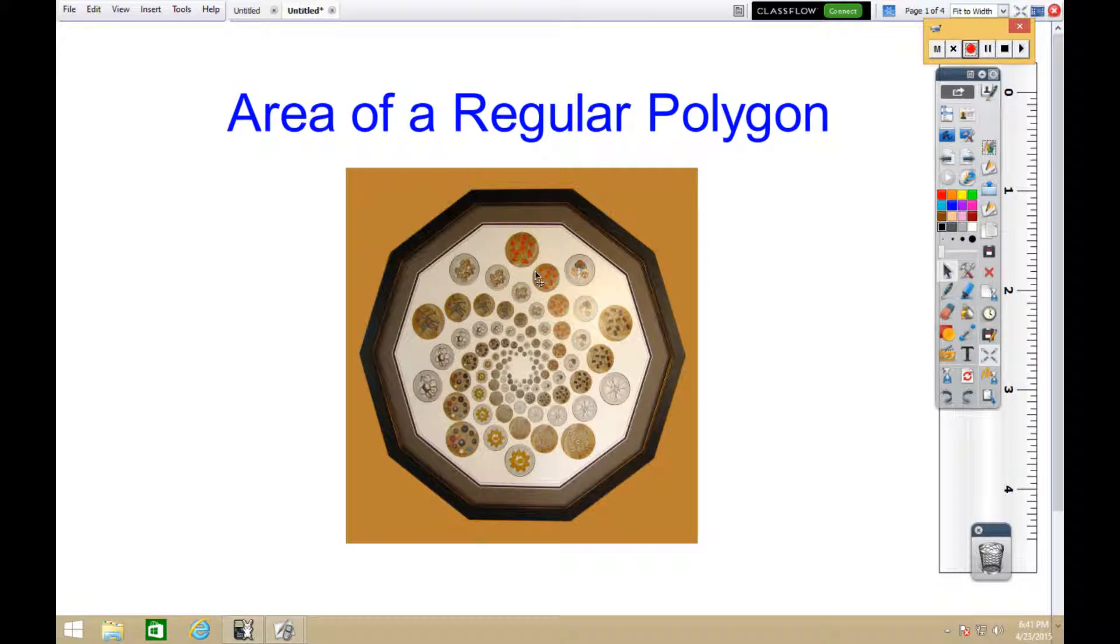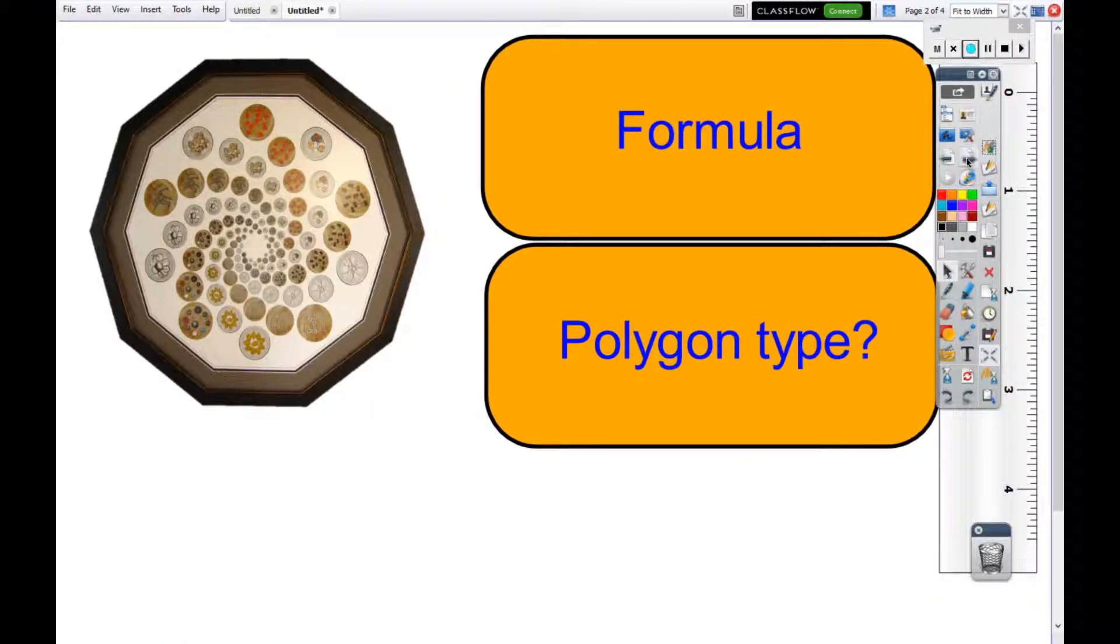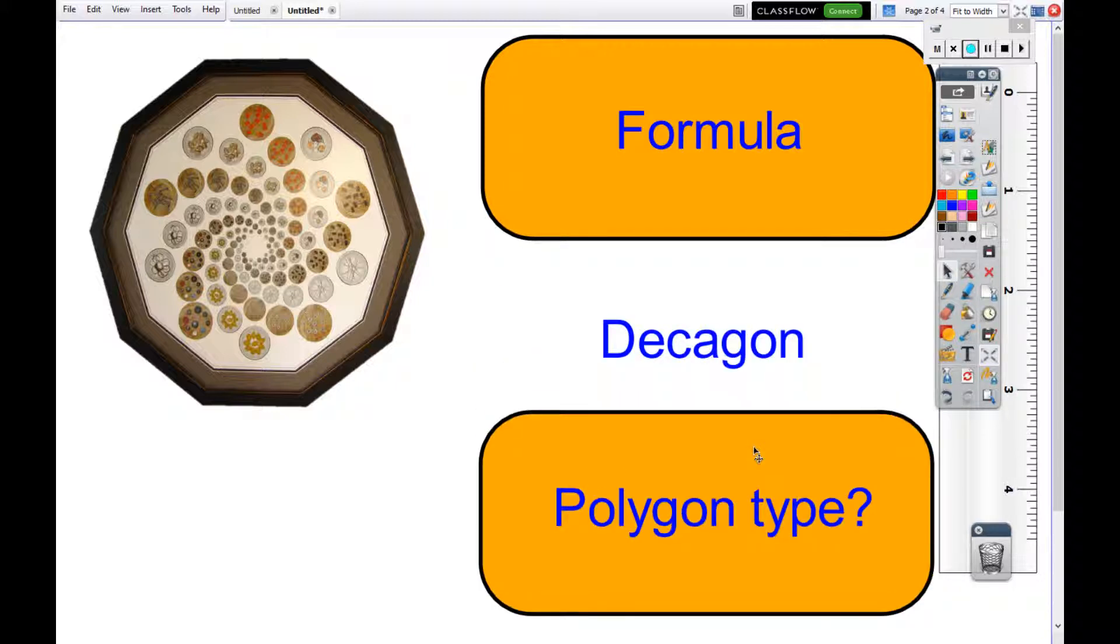We are installing this piece of tile in our kitchen and we need to find this area. We know this polygon has ten sides so it's called a decagon.